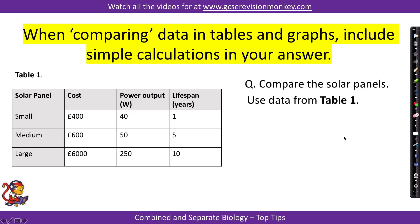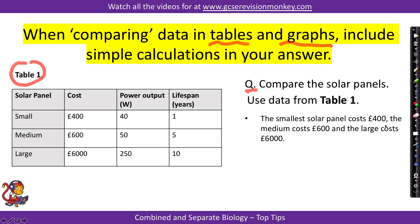Tip number five. When a compare question gives you data in a table or graph, include simple calculations in your answer. For example, given a table of different-sized solar panels, many students would just list the costs: smallest £400, medium £600, largest £6,000. However, simply listing data is not what the examiner wants — they expect simple calculations to show you have actually compared them.